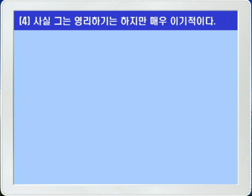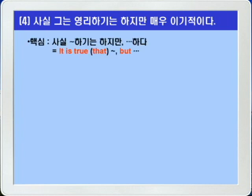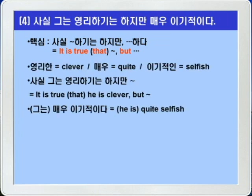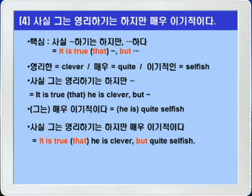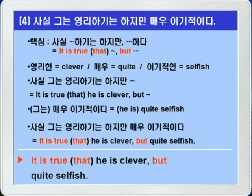4번입니다. 사실 그는 영리하기는 하지만 매우 이기적이다. 이 영작의 핵심은 'It is true that 뭐뭐 but 뭐뭐' 구문입니다. clever는 '영리한', selfish는 '이기적인'을 씁니다. but 다음에 he is는 중복이므로 생략할 수 있습니다. 정답: It is true that he is clever but quite selfish.